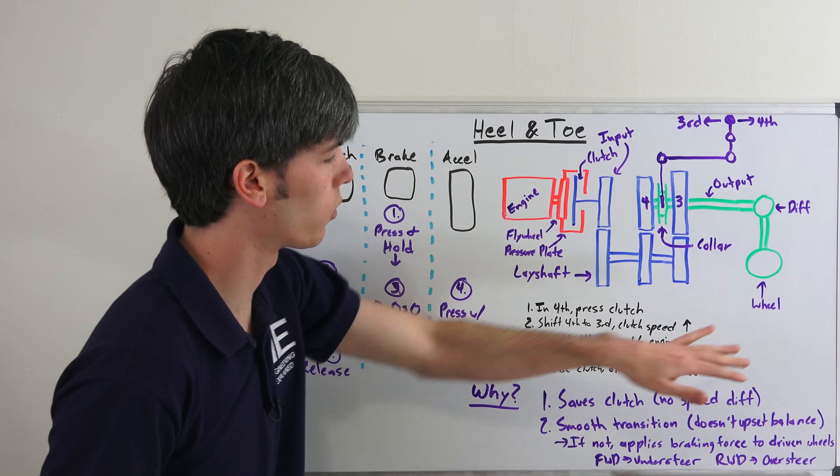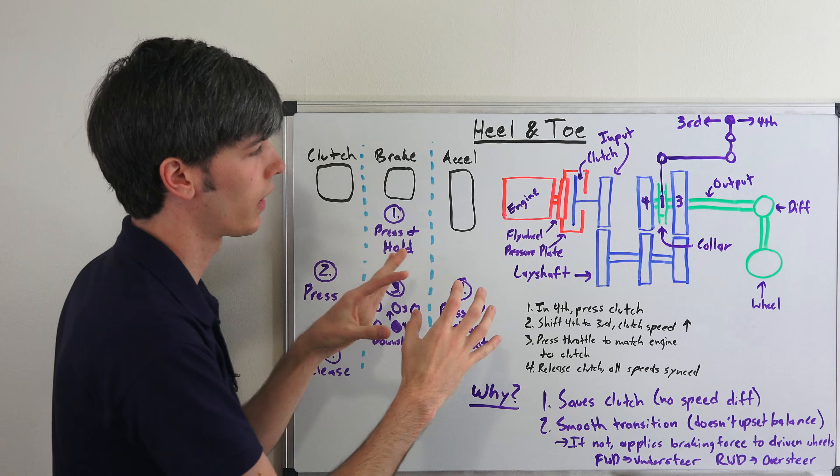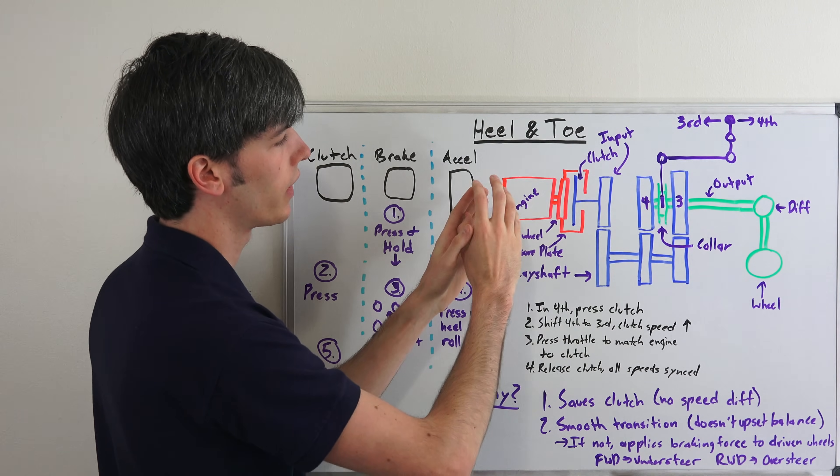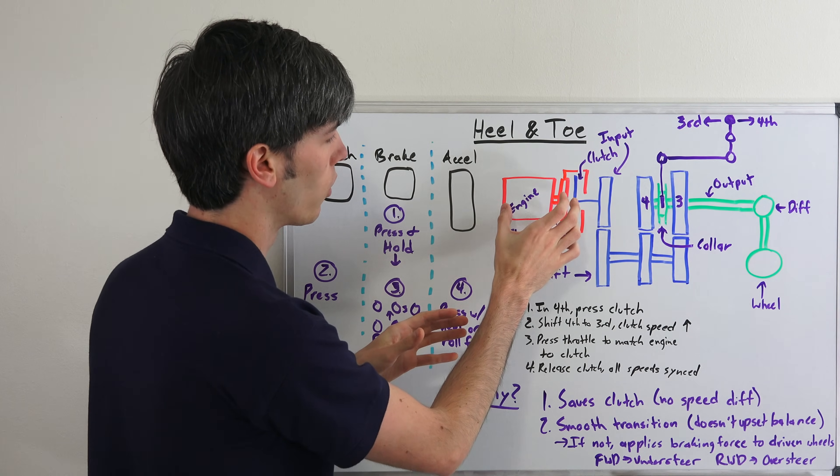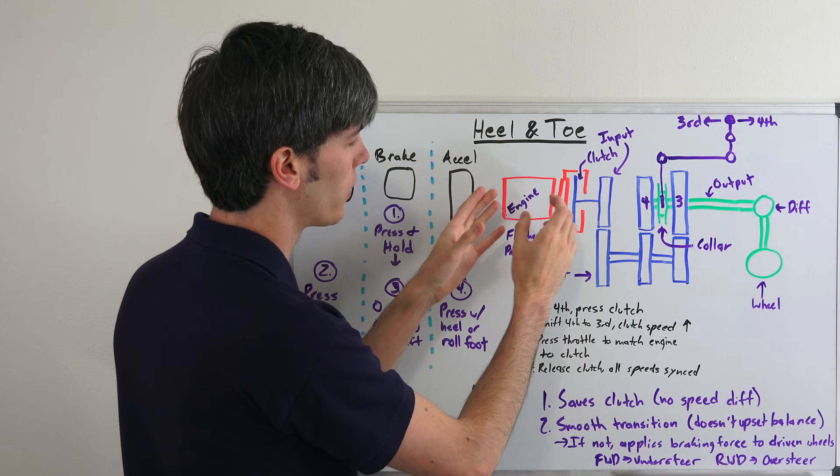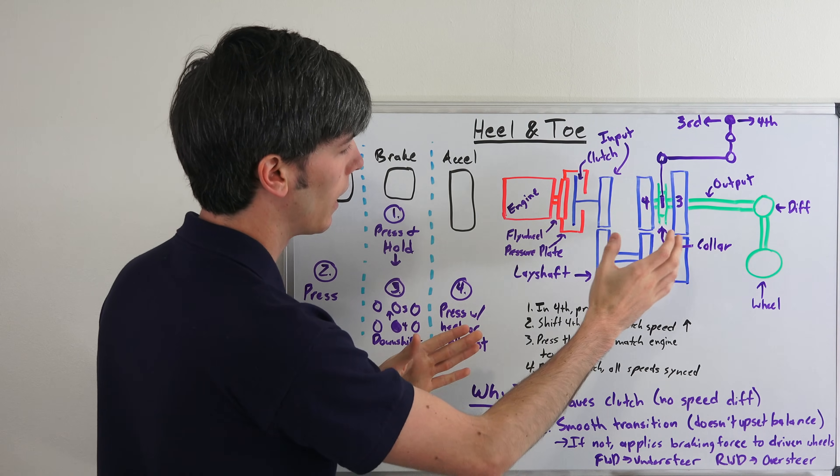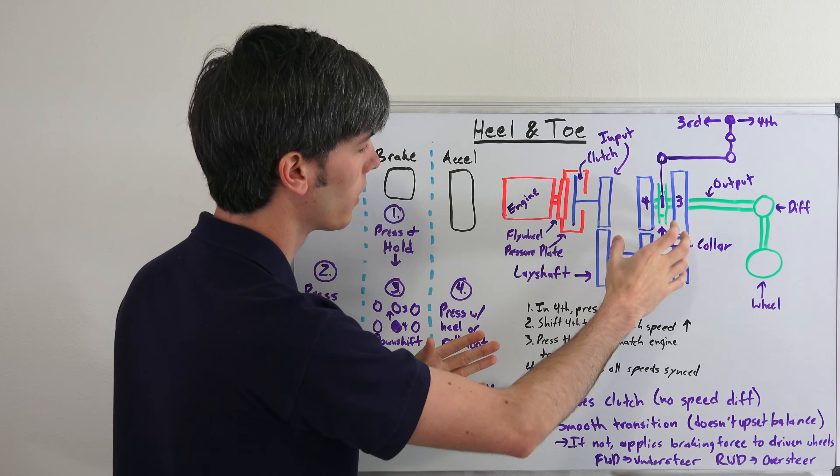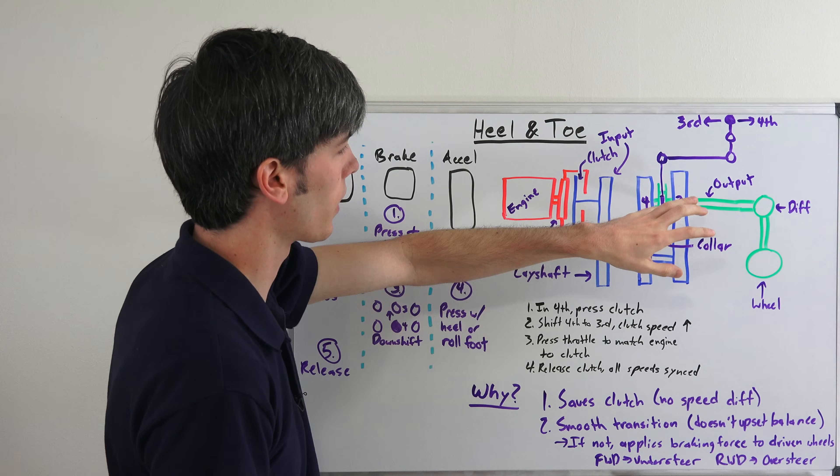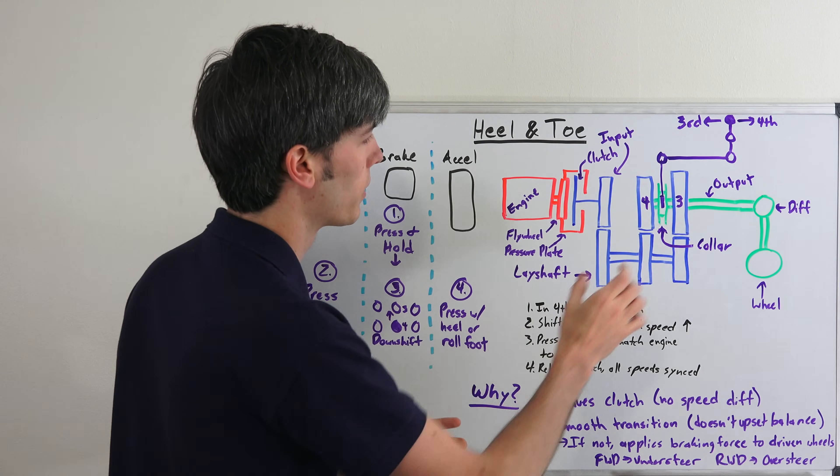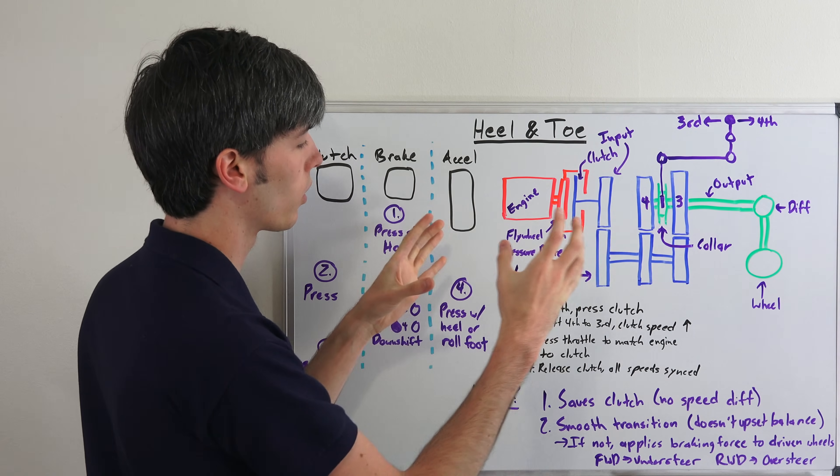There's our differential and wheel, so the process here, the first thing basically what you want to understand is that everything in each individual color can rotate individually. So red can rotate by itself which is the engine and flywheel and pressure plate. Blue can rotate by itself, the gears and the lay shaft. And green can rotate by itself, your wheels up to the collar of the transmission which is on the output shaft.